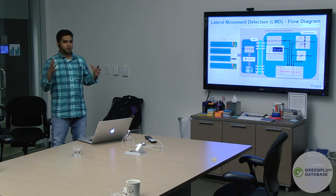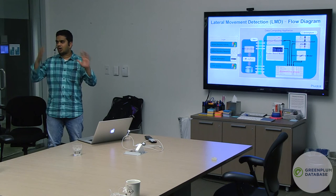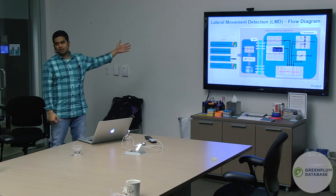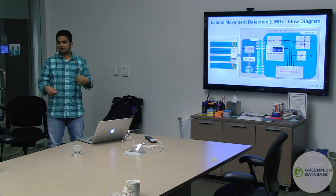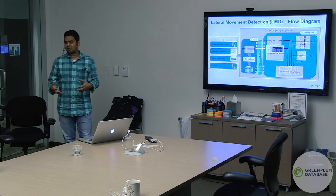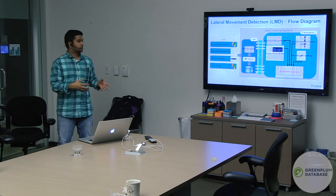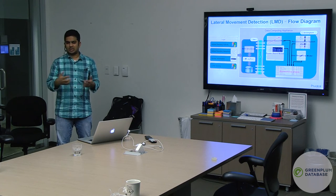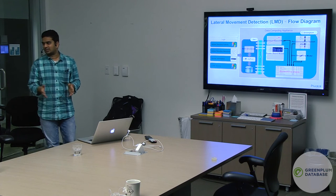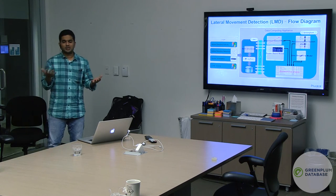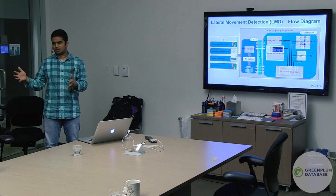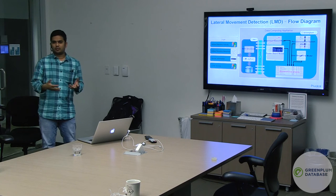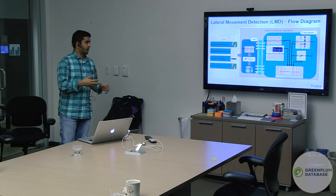To solve this problem, the first step is aggregating all logs that arise from the network. There could be a variety of logs: active directory logs showing user authentication, active directory metadata giving information about servers and users, and LDAP activity showing whether authentication is a failure or success. We need a place to store these logs — Greenplum is one of the solutions we've used for solving this problem.